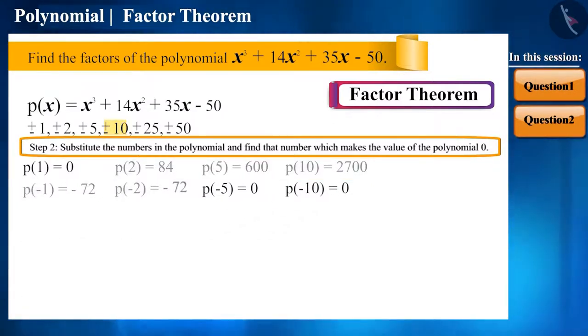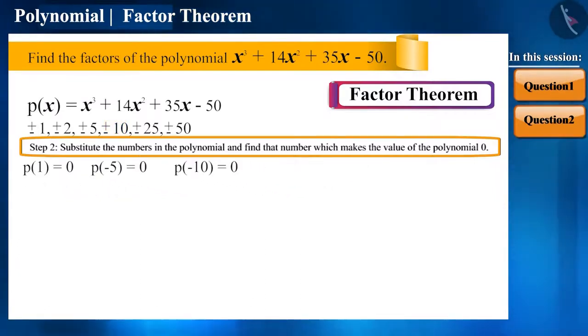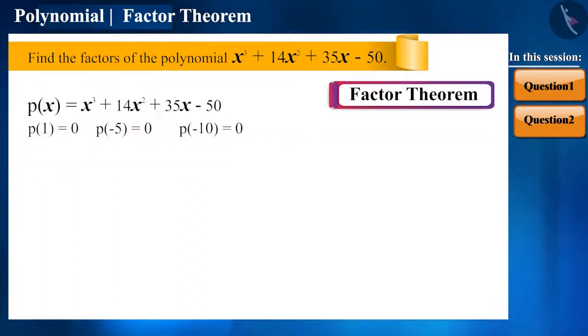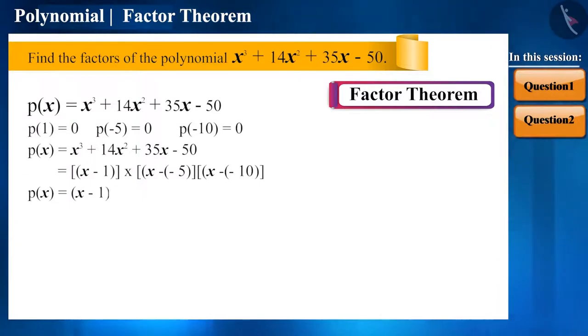Here, for the cubic power of x, we get three zeros. And since this is a cubic polynomial, there will not be any more zeros. And now, we can represent this polynomial in terms of its factors. p of x is equal to x minus 1, x plus 5, x plus 10.